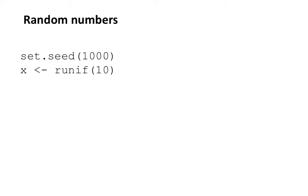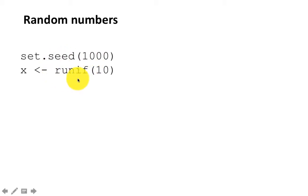It doesn't matter what the seed value is — it can be 1,000, 999, or minus 5. So long as we set the seed to the same starting value, all the random numbers that you and I generate will be in exactly the same sequence. Here I just set the seed to illustrate that concept, and then I'm generating random uniform numbers using runif.